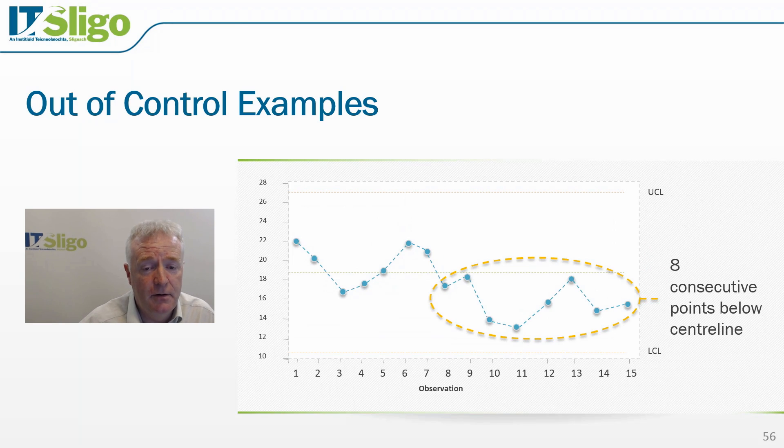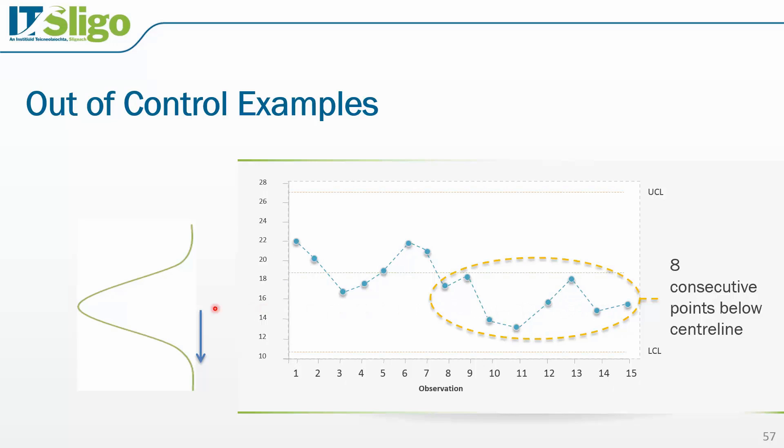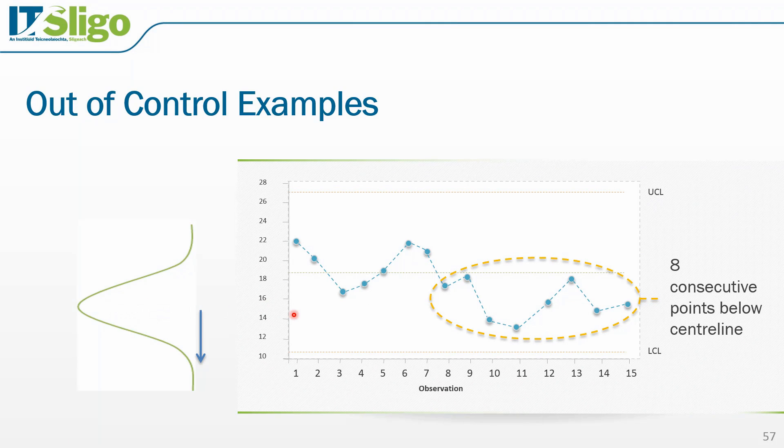Here is another example of an out of control condition. Here we have eight points in a row falling below the centreline. Now it is not unusual to get eight points falling below the centreline, but it is unusual to get eight points in a row. This would be similar to tossing a coin and in eight consecutive throws getting eight heads. At that point, you may begin to suspect that there is something wrong with your coin. Now this is probably occurring because the process mean has shifted. While the process mean was centred at this point, the process mean now appears to have drifted downwards. So in other words, our process is out of control.